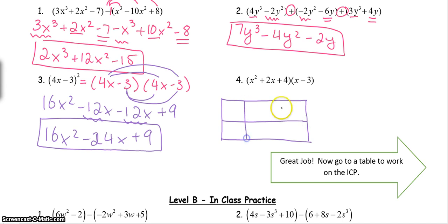So I'm going to draw a box that has three across and two down because I've got three terms here and two terms here. So for my three terms, I'm going to split them up across the top. So x², 2x, and 4. My two terms are going to get split across the side, x and -3.